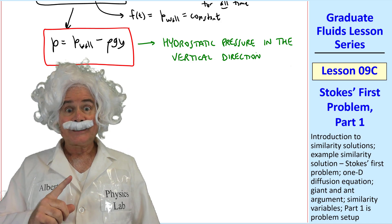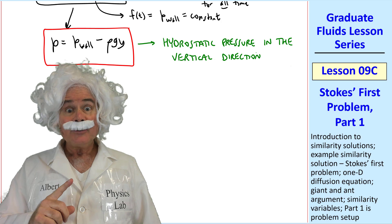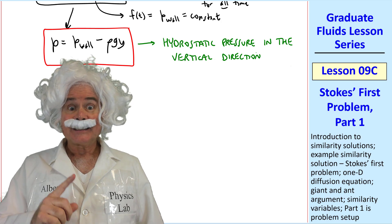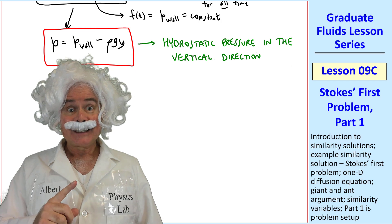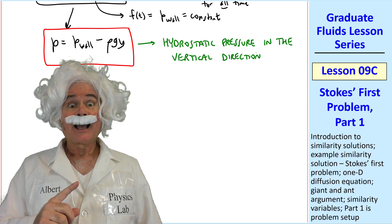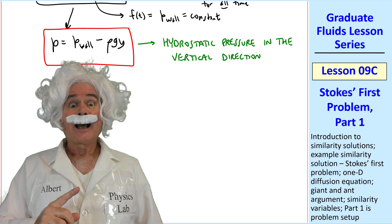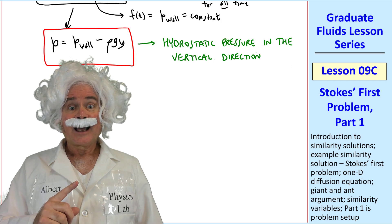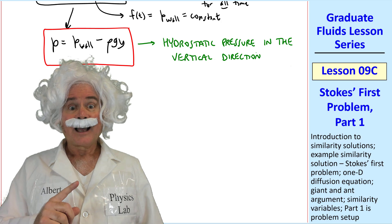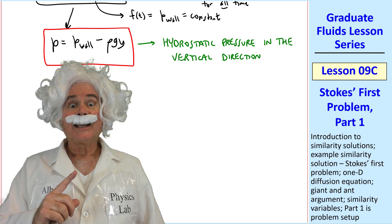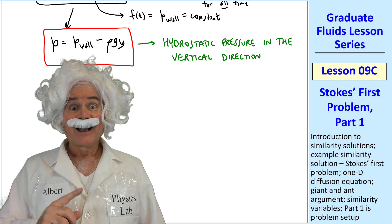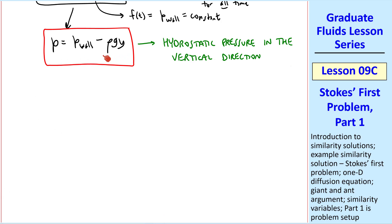This is not hydrostatics — the fluid is moving. So why doesn't the pressure decrease as the speed increases? You're talking about the Bernoulli effect, which applies to inertial flows with negligible friction. This flow is dominated by viscous effects, so the Bernoulli effect is not applicable here. Pressure decreases linearly as you go up, even though there's a flow.